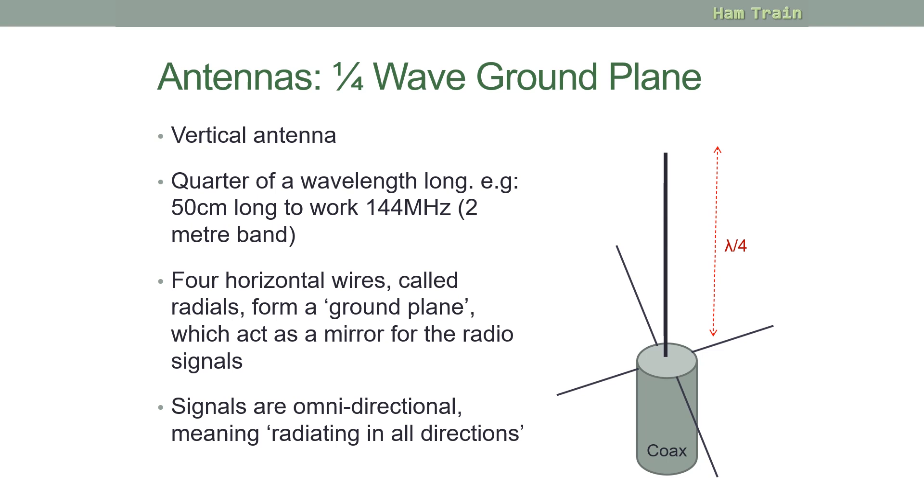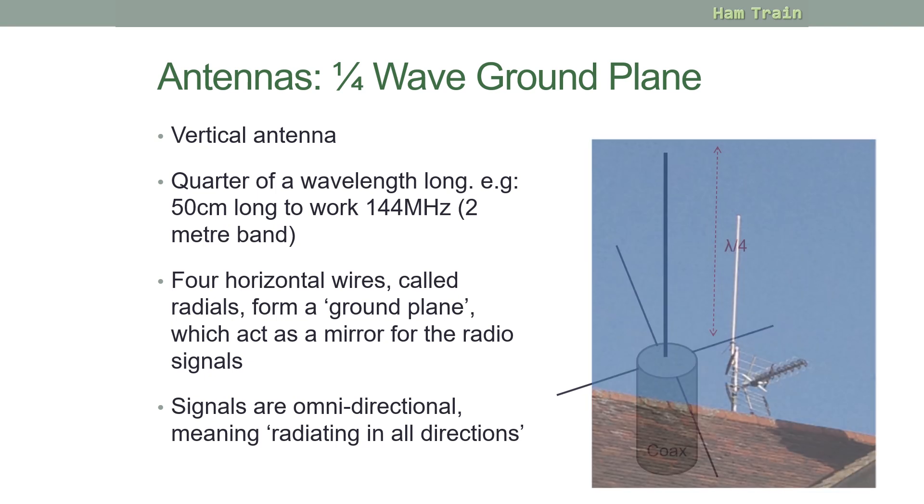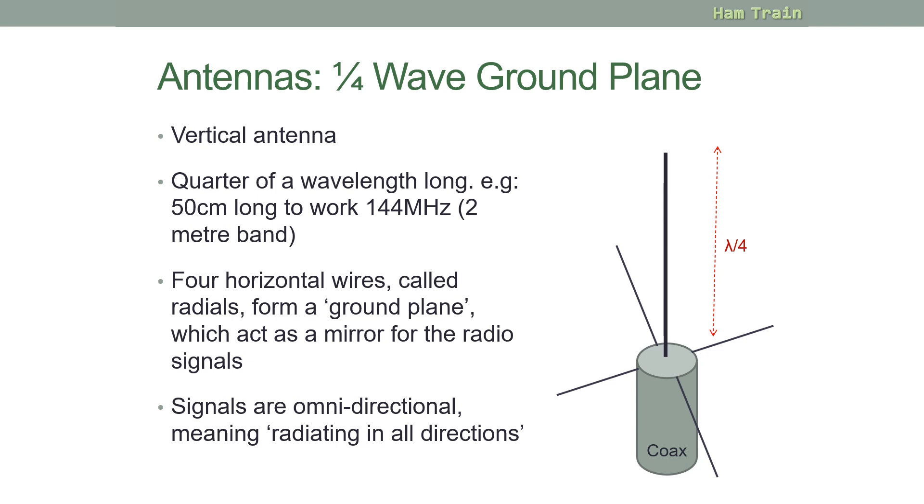Next, the quarter wave ground plane antenna. This is a vertical antenna. You saw it earlier as the white stick I mentioned that you might find on top of an amateur's roof. These are a quarter of a wavelength long, as the name suggests. So for 2 meters, or 144 megahertz, you could expect this antenna to be 50 centimeters, or half a meter tall. You'll also note there are a number of wires coming off at the bottom here. These are called radials, and they form what's called a ground plane, which acts as a mirror to allow the radio signal to be sent off without any of the signal going below the antenna.